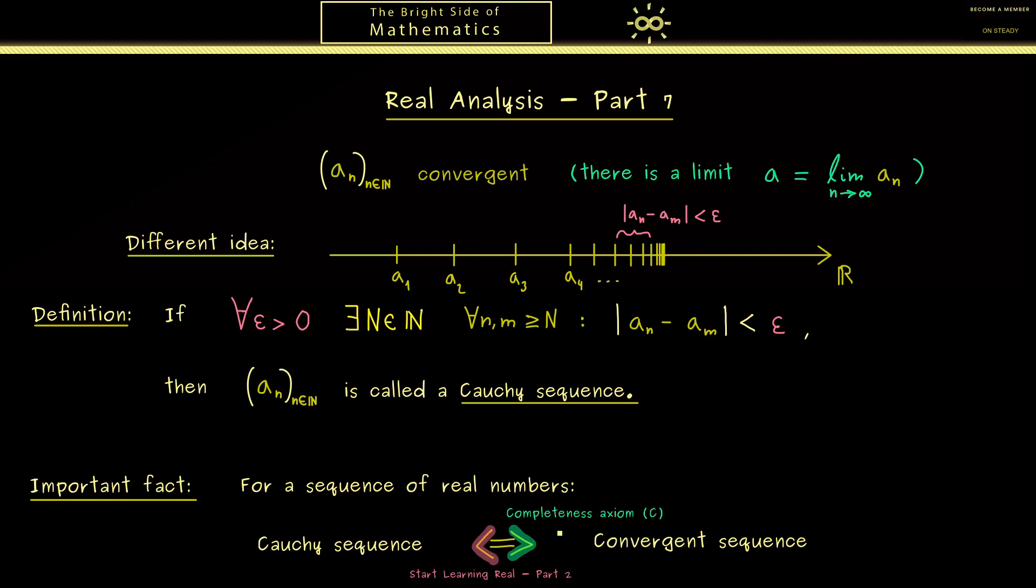Now what you really should remember is when we work in the real numbers we don't have to distinguish Cauchy sequences and convergent sequences. They have different definitions but for the real numbers they mean the same thing.